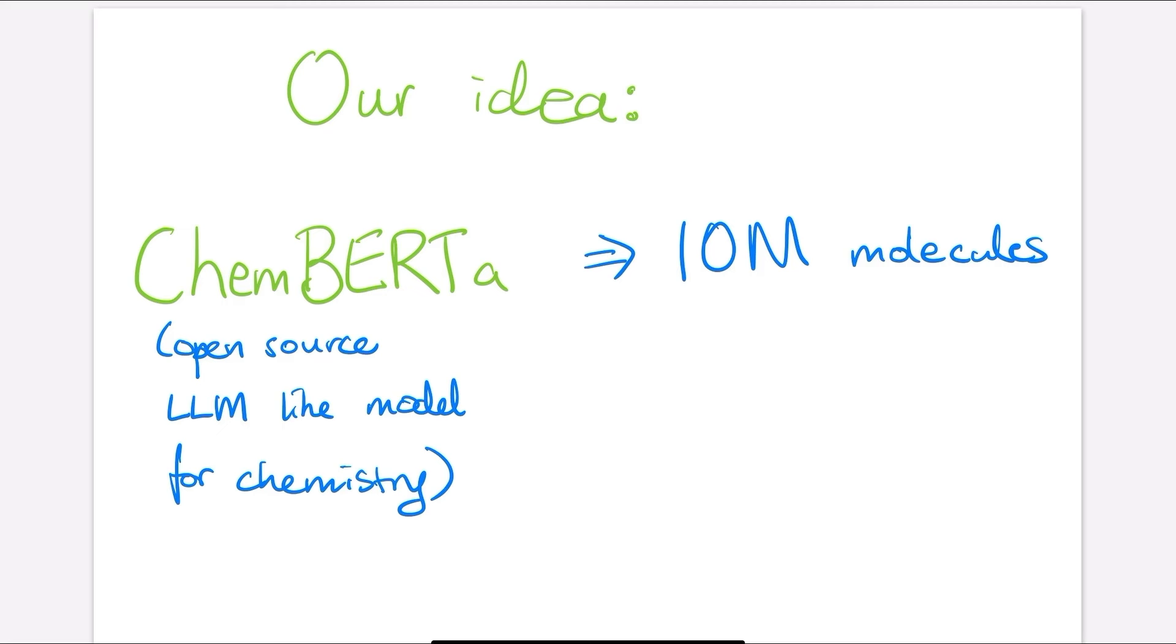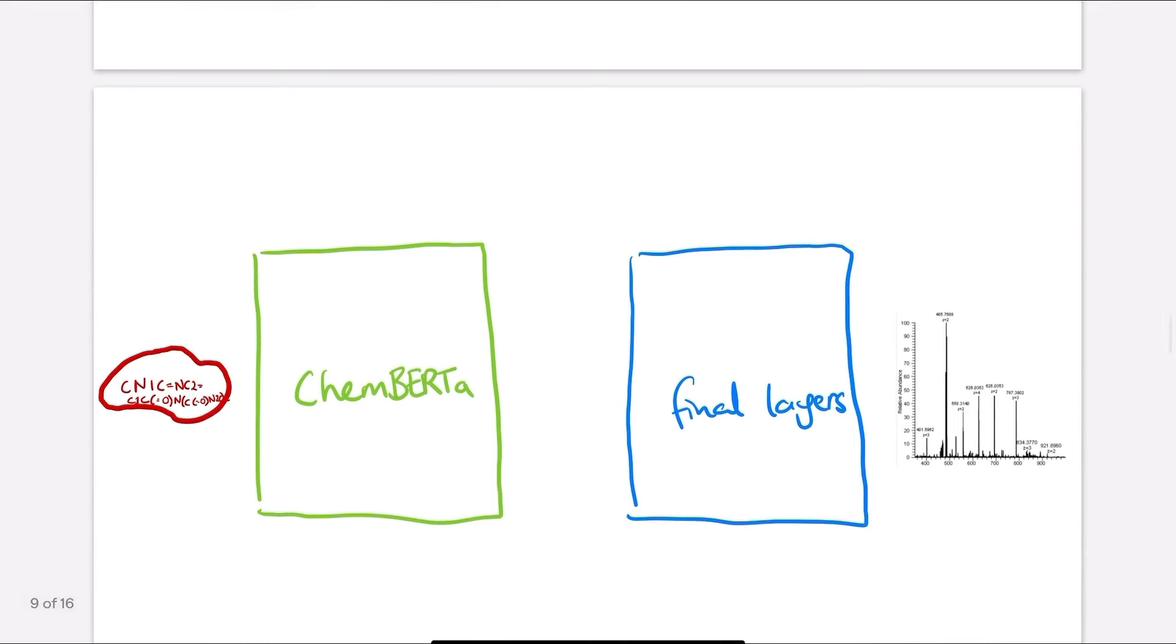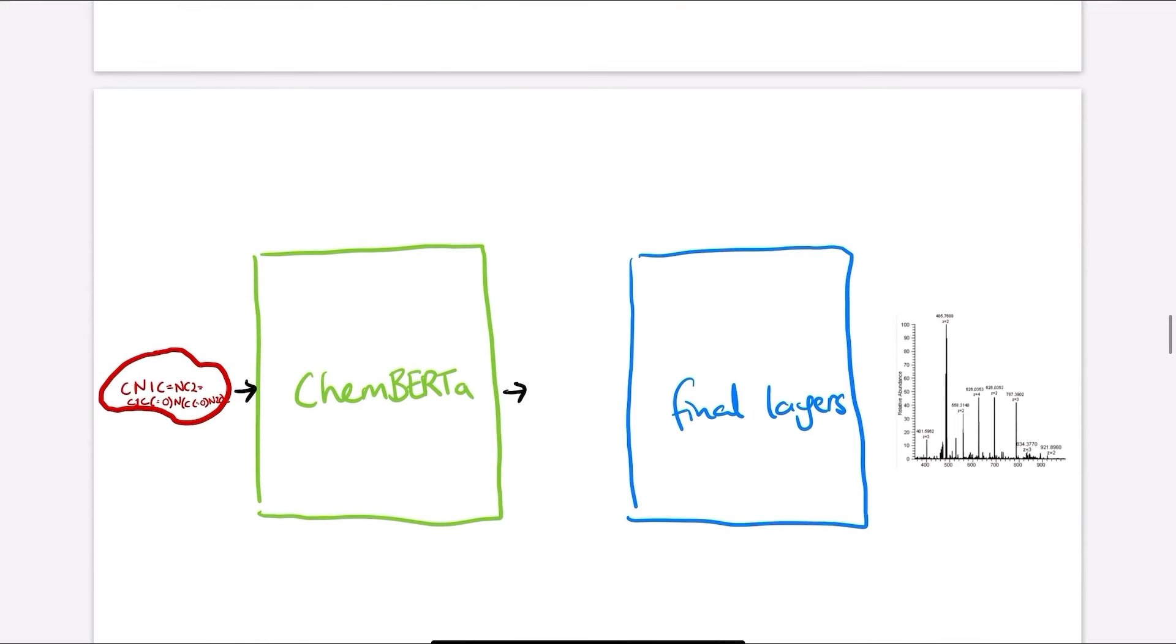Our idea was that we have a million data points, but we can kind of augment that with ChemBERTA. So the ChemBERTA model is a pre-trained model for chemistry that was trained on about a million molecules. Now ChemBERTA itself knows nothing really about mass spectroscopy, but our idea was we would put the molecule into ChemBERTA and then take the output from ChemBERTA and put it into a couple of final layers and output a mass spectrum. And so these final layers would be the ones responsible for outputting the spectra, but ChemBERTA would use its general knowledge about how molecules work, and that would be a useful starting point.